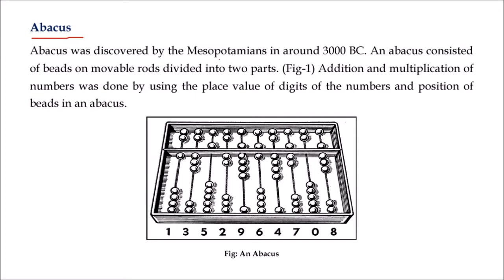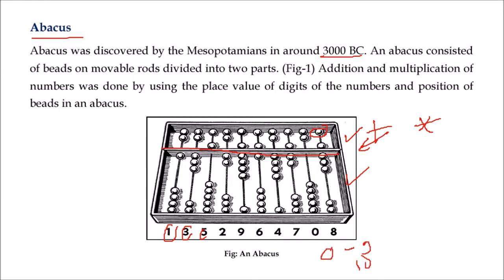The abacus was discovered by Mesopotamians around 3000 B.C. As you see in this figure, it consisted of beads on movable rods divided into two parts. Addition and multiplication of numbers can be done using the place values of the digits and the position of beads in an abacus. The positions represent digits 0 through 9 — that is, 10 numbers.